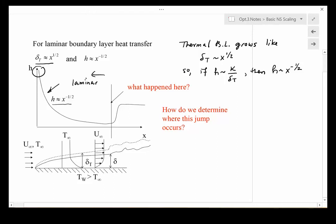Then something happens and it jumps up—the heat transfer coefficient increases suddenly over some distance. We need to figure out how this jump occurs, where it occurs, and what the physics associated with it are. What do you think causes this to happen?